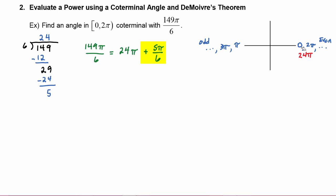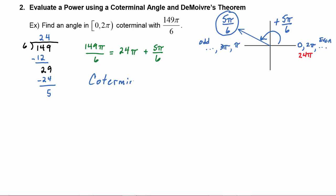Starting from the positive x-axis we have to go five pi over six more, which means we end up at five pi over six. So the coterminal angle is five pi over six, and five pi over six is coterminal with 149π over six.